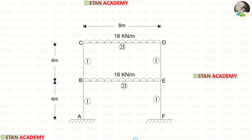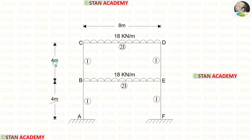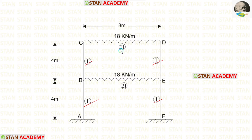In this frame, there are two stories. In the beams, we have a uniformly distributed load of 18 kN per meter. In the columns, there are no loads. The first story is 4 meters in height and the second story is also 4 meters in height. The length of the beams is 8 meters. The moment of inertia for the columns is I, and the moment of inertia for the beams is 2I.